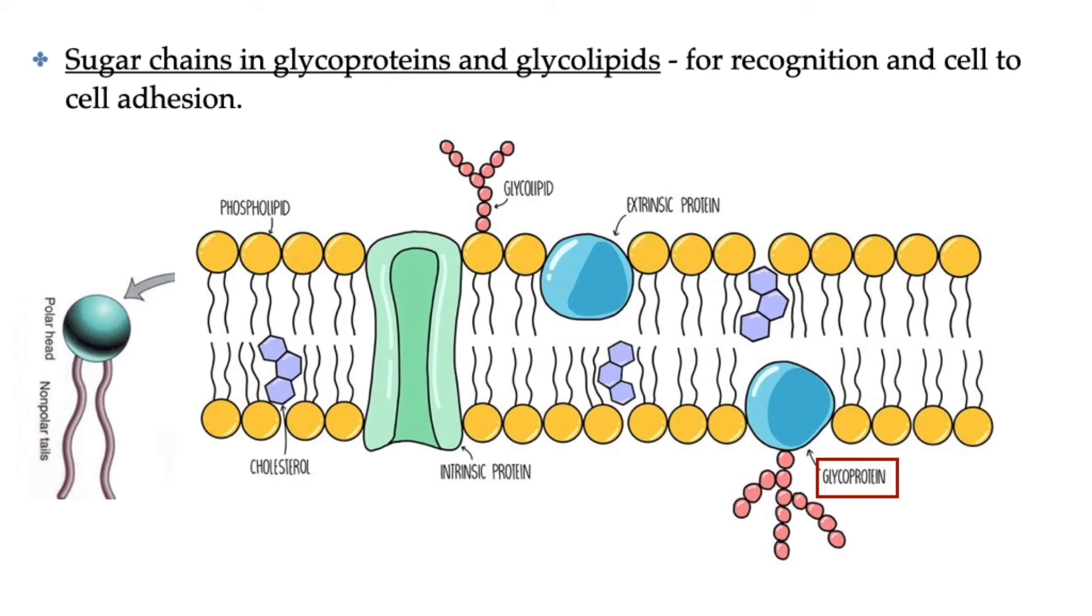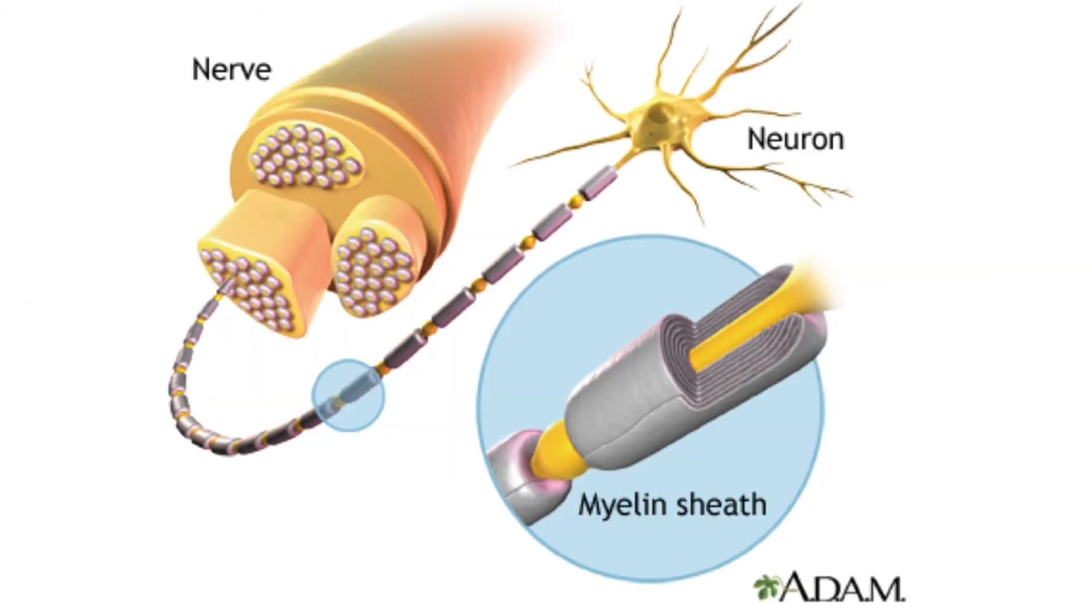While glycoproteins are proteins covalently bonded to carbohydrates, glycolipids are lipids bonded to carbohydrate molecules. Cell communication and adhesion are not the only roles of glycoproteins and glycolipids. For example, glycolipids are used for electrical insulation in nerve cells. They are found in high numbers in an insulating sheath called the myelin sheath that surrounds part of the nerve cell or neuron.